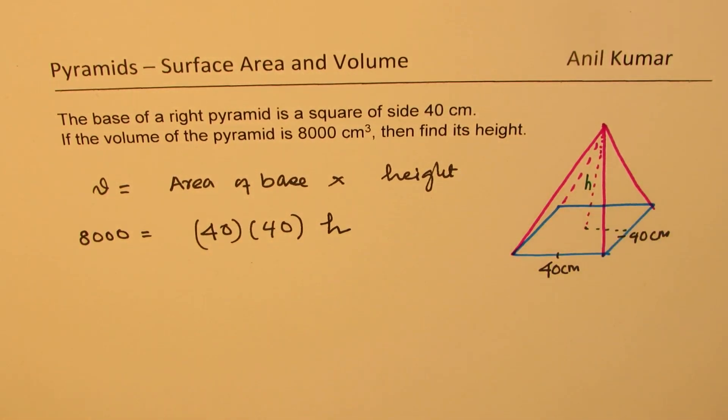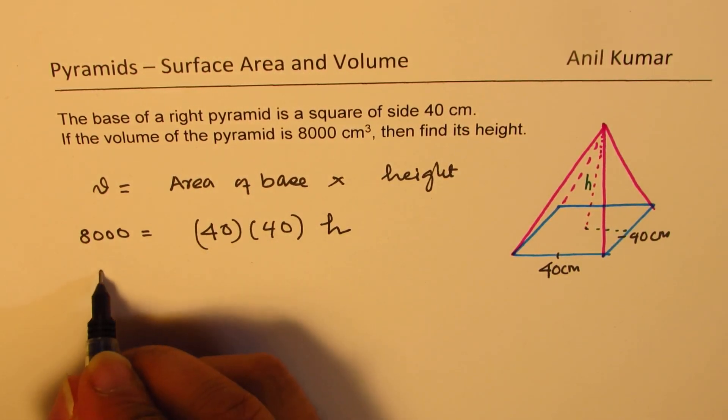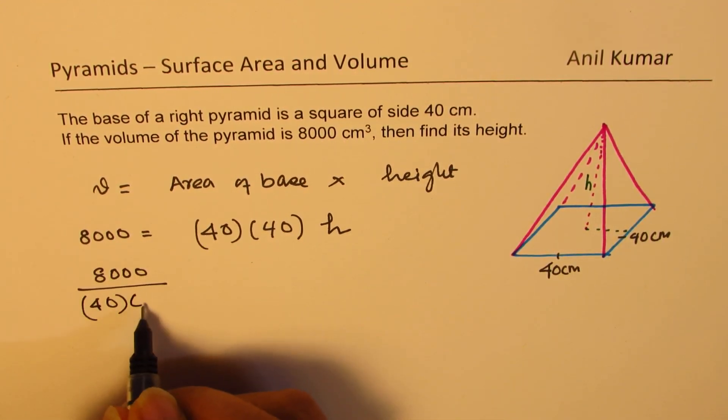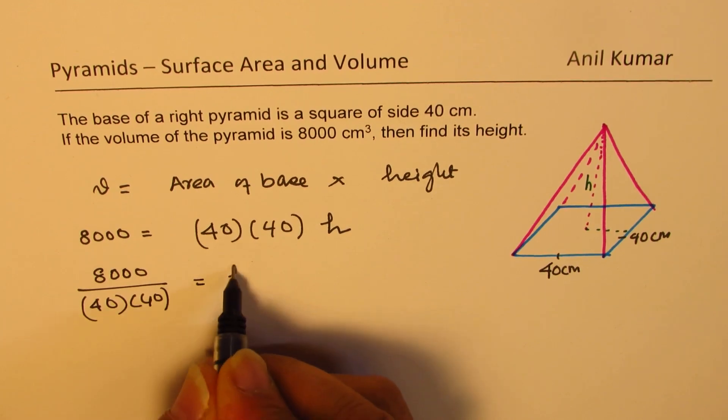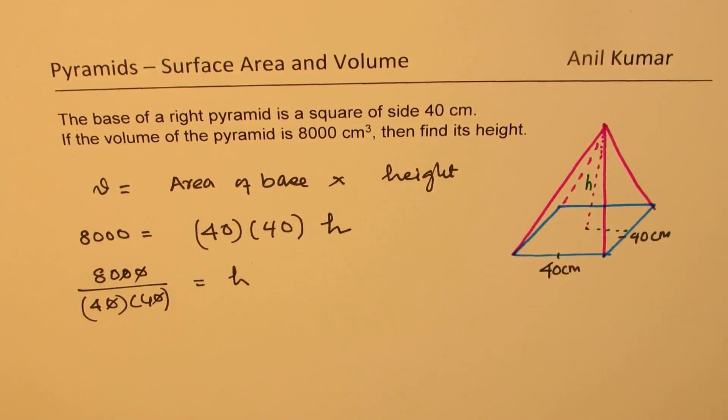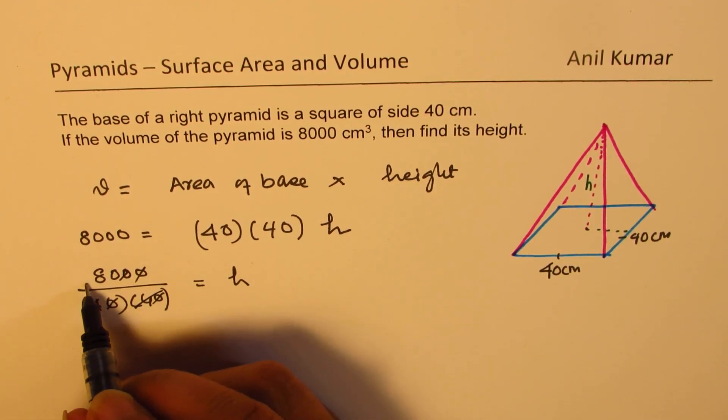So from here we can find 8,000 divided by 40 times 40 should be height. So cancel whatever you can. We can divide by 4, 4 goes 20 times, and this 4 goes 5 times.